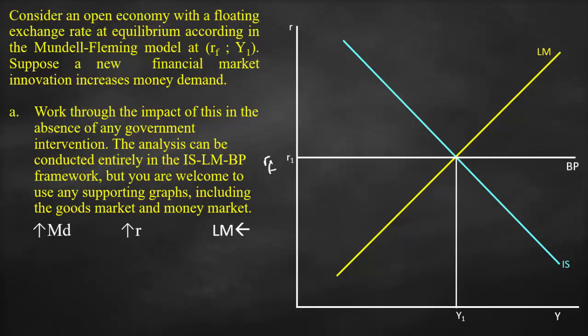Then, what will happen? Because of higher money demand, it would result in higher interest rate. Because the money demand will shift to the right, this higher interest rate would result in shifting the LM curve to the left.